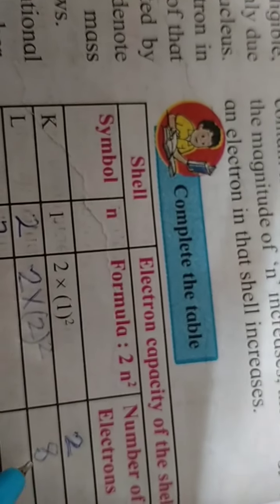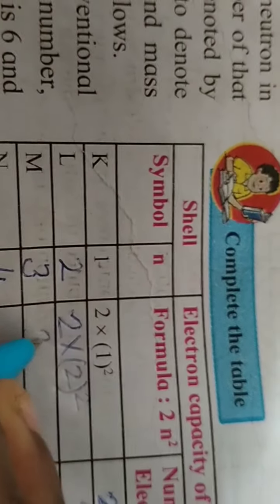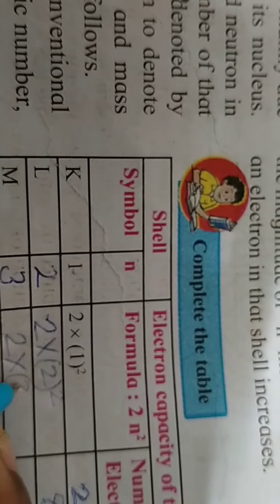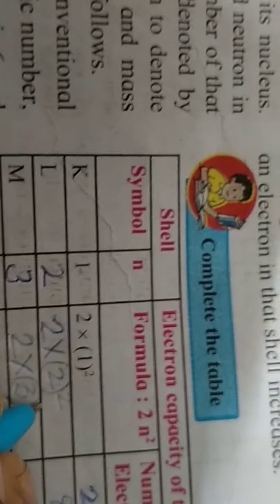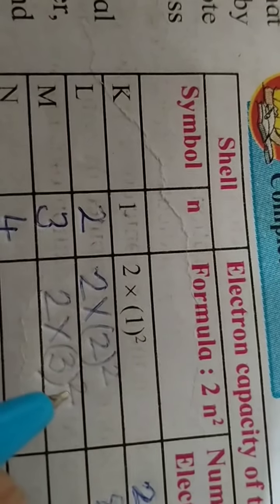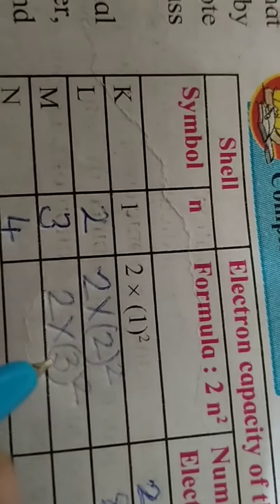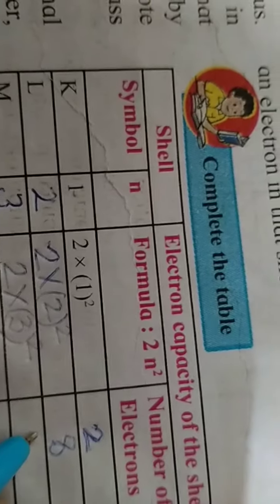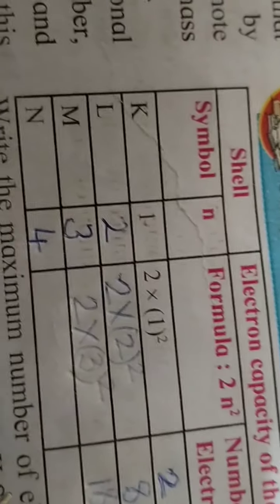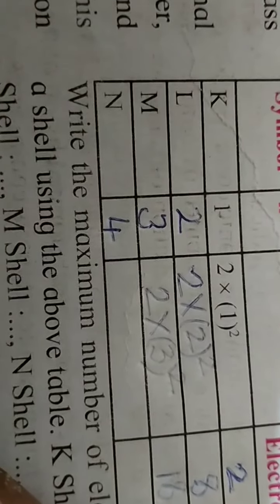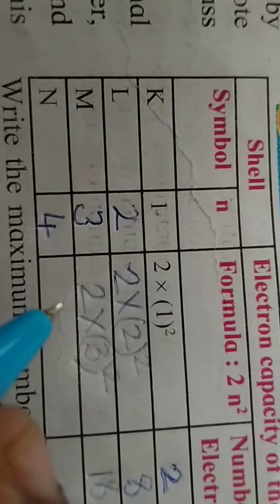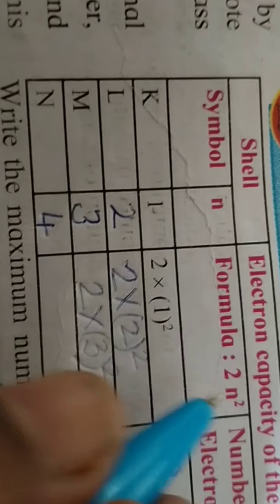For the third orbit, 2 into 3 squared. That's 2 into 9, which equals 18. In this way, we calculate the values. For the fourth, 2 into N, we substitute 4. This way you can calculate the value of N.